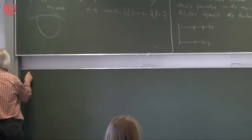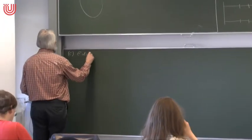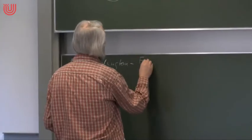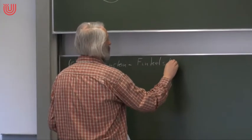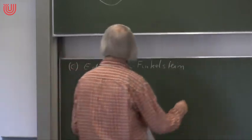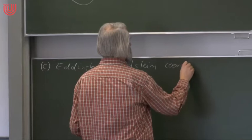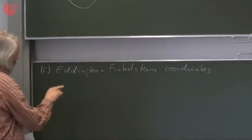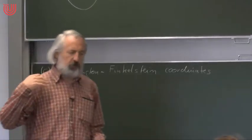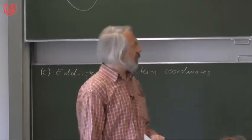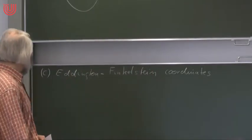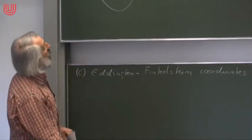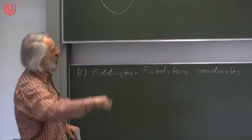Now I come to the Eddington-Finkelstein coordinates. These are the most interesting and most important ones for understanding what a Schwarzschild black hole is. They are the coordinates which give us the possibility to go across the surface r = rs — they allow us to extend the spacetime across this surface.